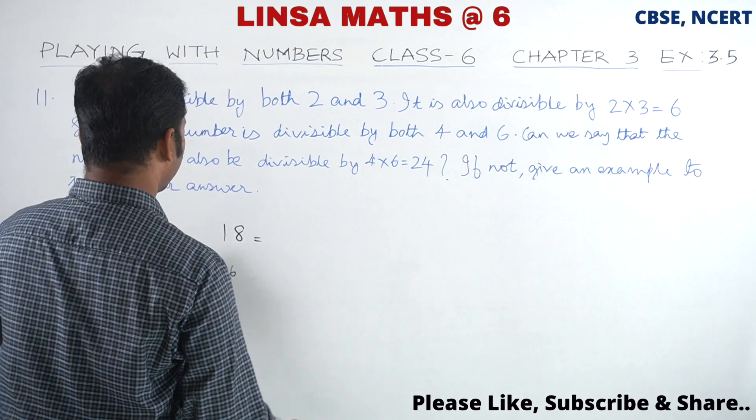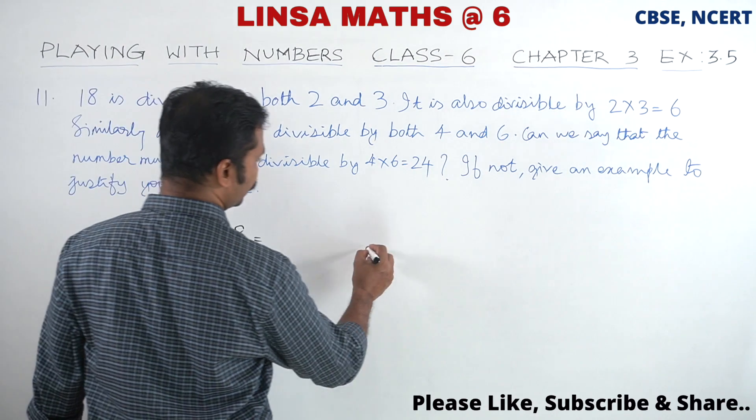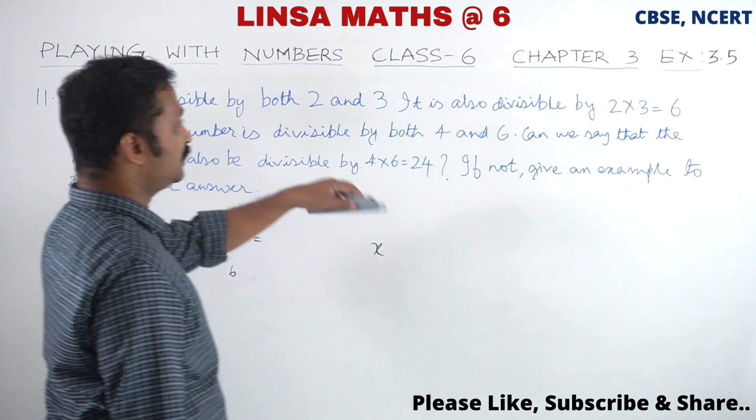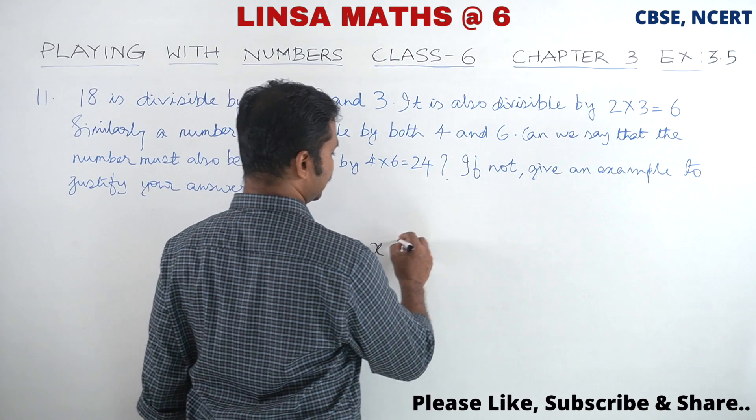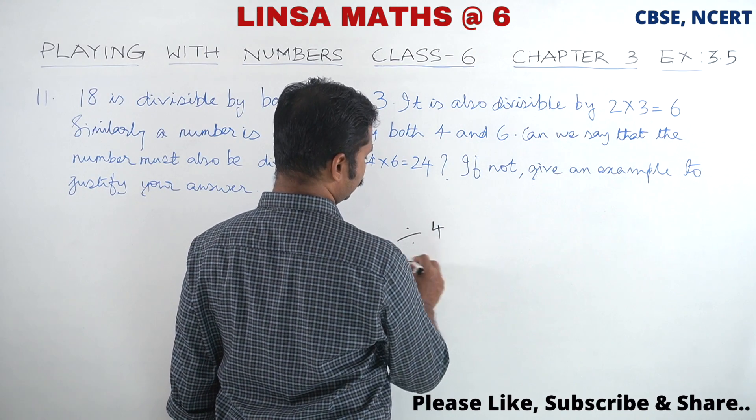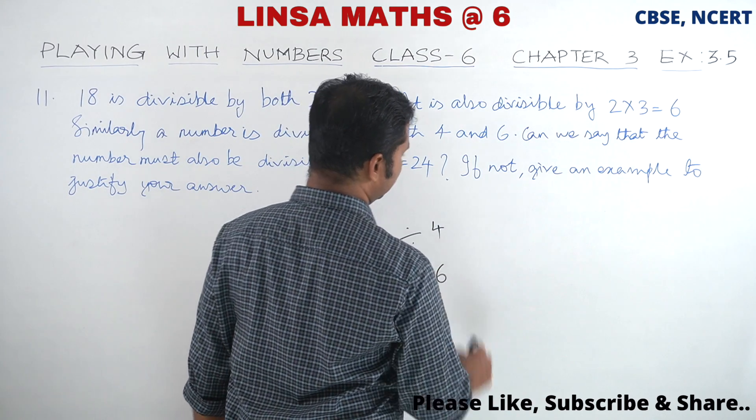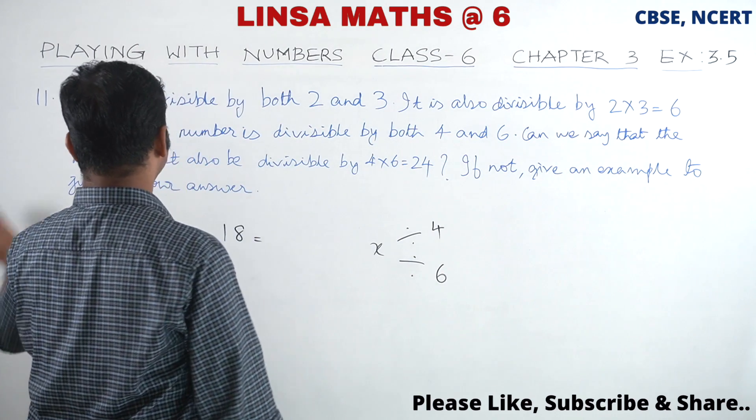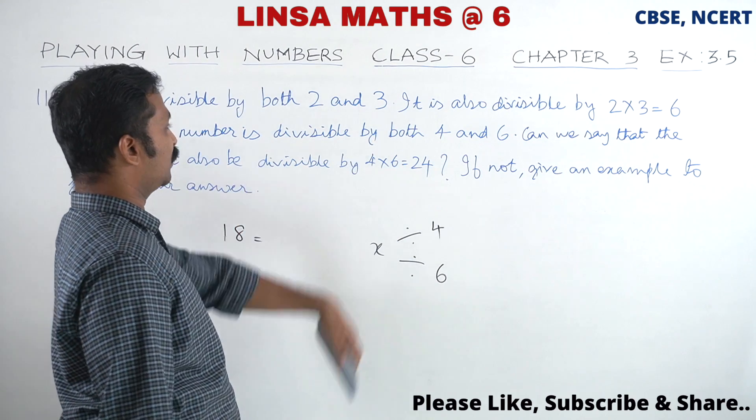So let's see. This number is divisible by 4 and 6. Can we say that the number is also divisible by 4 into 6 equals 24?